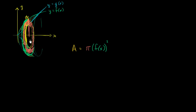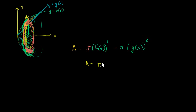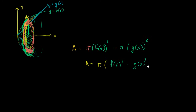But now we have to subtract out the inside. What's the area of the inside? We're going to subtract it out — it's going to be pi times the radius of the inside squared. What's the radius of the inside? Well, the inside in this case is g of x. So it's pi times g of x squared. That's the inner function, at least over the interval that we care about. So the area of this washer, we could factor out a pi and write it as pi times f of x squared minus g of x squared.